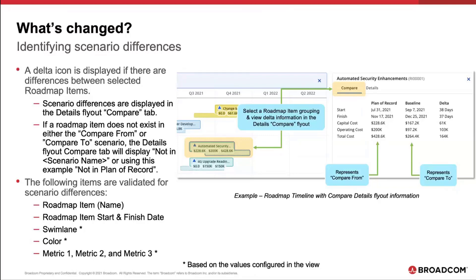Another note: if a roadmap item doesn't exist in either the compare from or the compare to scenario, that details flyout in the compare tab would simply state 'not in' followed by whatever the name of the scenario is. I'll show that in a second.